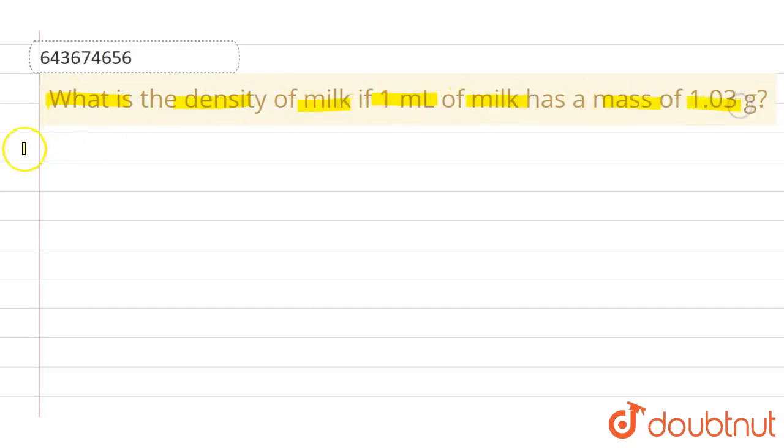So what we are given: we are given the mass of milk, that is 1.03 grams, and we are also given the volume of milk, which is given as 1 milliliter.